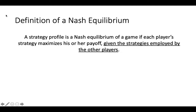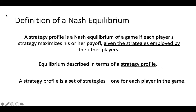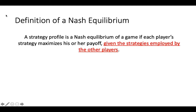Let's start by breaking down this definition. The first thing to note is that the Equilibrium of a game is defined in terms of a strategy profile. A strategy profile describes one strategy for each player in the game. The next thing to note is that each player's strategy is optimal, but only given the strategies that the other players are playing.